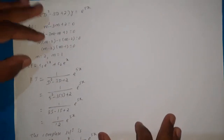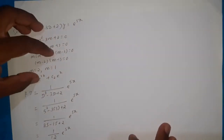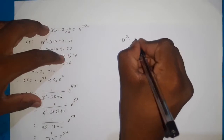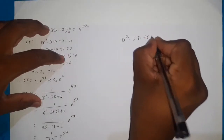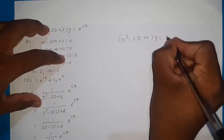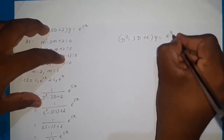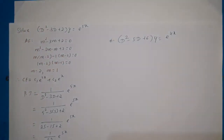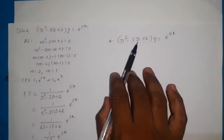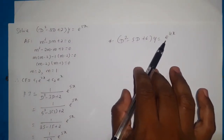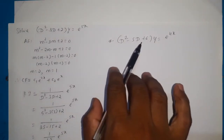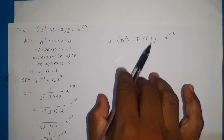Now try a similar example: (D² - 5D + 6)y = e^(4x). Here a = 4 and f(D) = D² - 5D + 6. Try solving this one on your own.